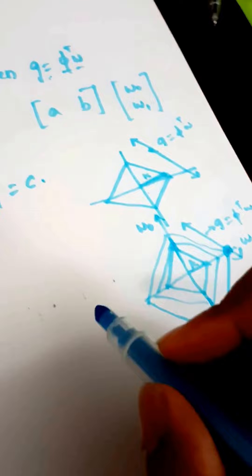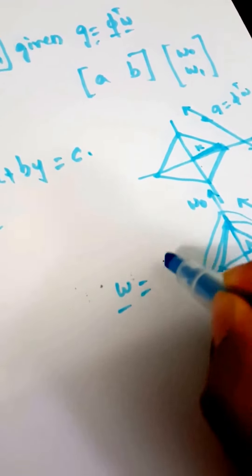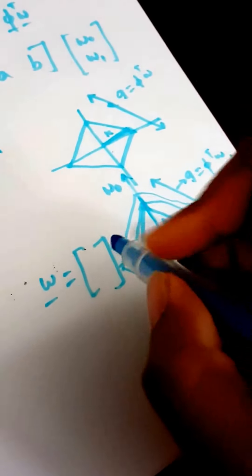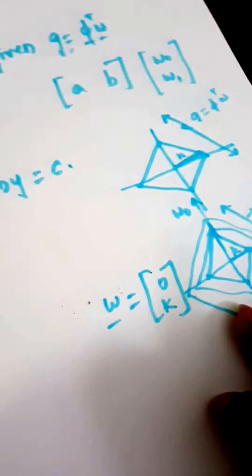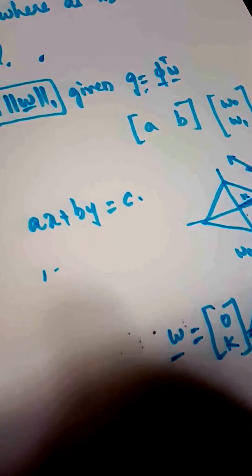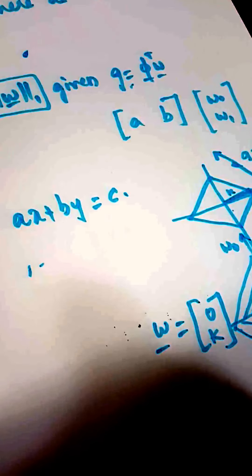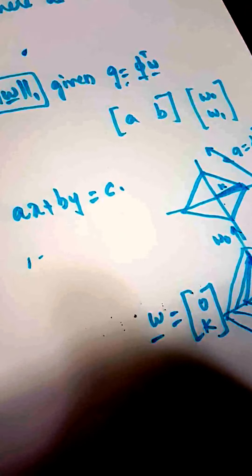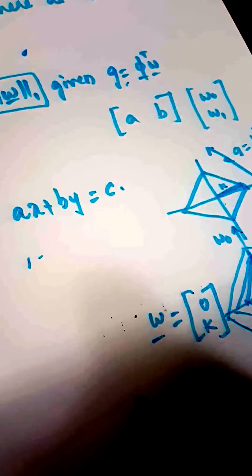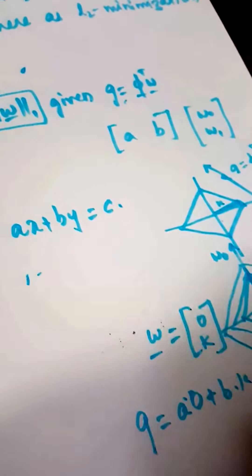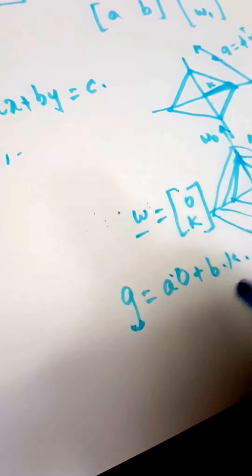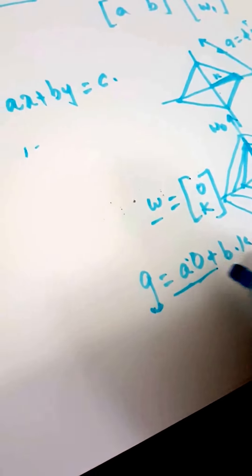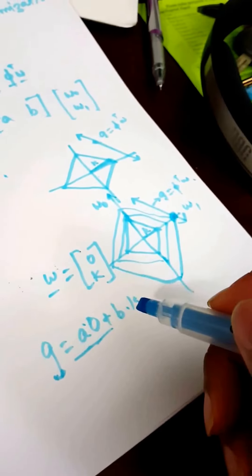So my W vector will be W1 equals some K and W0 equals zero. My G would be A times zero plus B times some constant. So one value is becoming zero here.